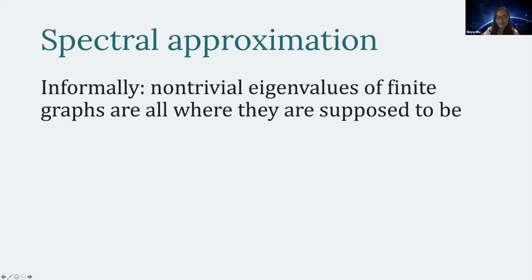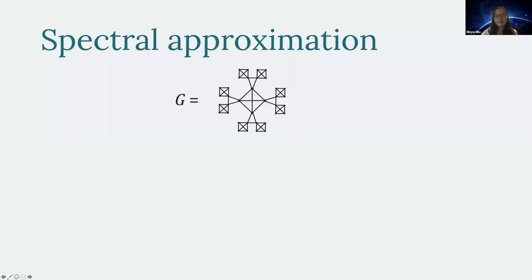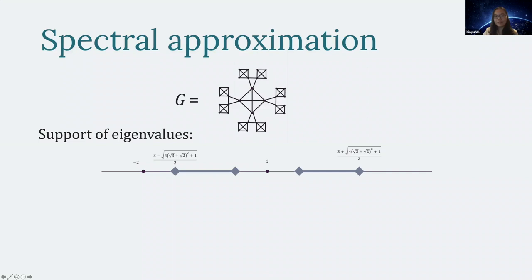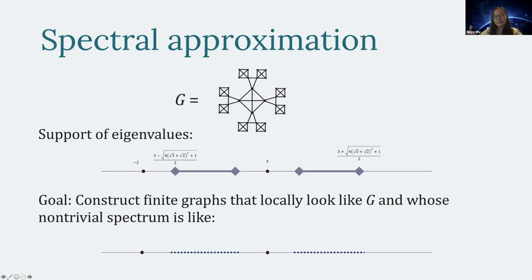Informally, I want all non-trivial eigenvalues of the finite graphs to be exactly where they're supposed to be — a stronger notion than just asking the spectral radius to be bounded. As a picture, for the graph I was looking at, the support of the spectrum has two atoms and two intervals. I want to find a finite graph that locally looks like this infinite graph, and whose non-trivial spectrum matches — all the gaps should match and all the intervals should be filled out, with at least one eigenvalue in every epsilon-interval.